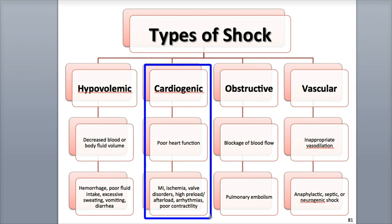Cardiogenic shock is often caused by a myocardial infarction, or heart attack, which prevents the heart from contracting normally. It can also be the result of ischemia, which is poor perfusion or blood flow of the heart, problems with the heart valves, too much preload or afterload, arrhythmias or irregular heart rhythms, or poor contraction of the cardiac muscle fibers.